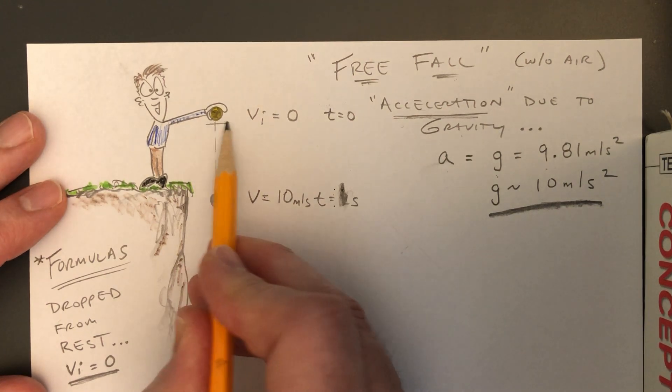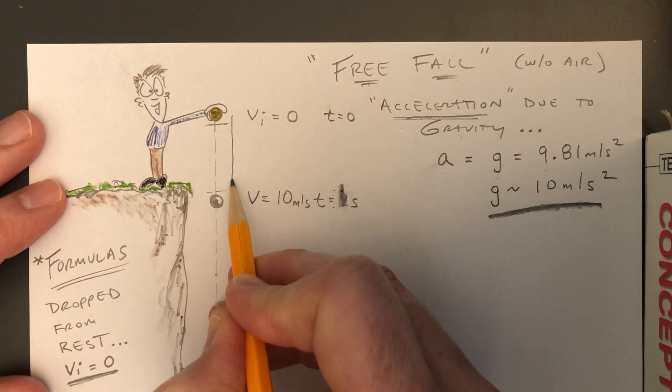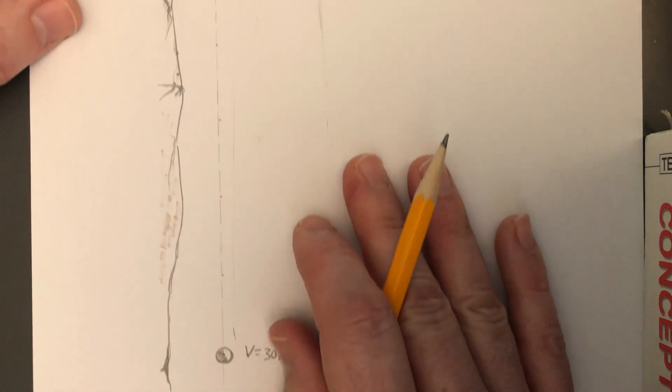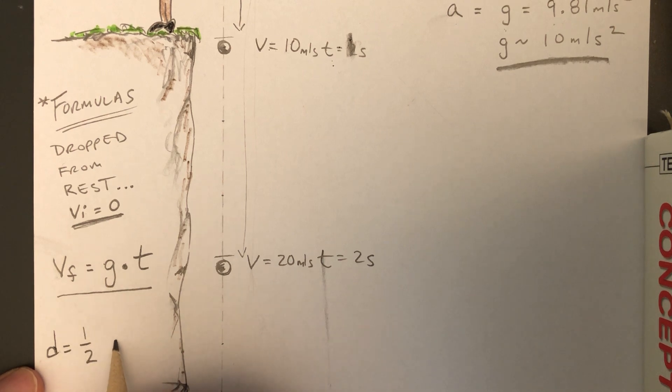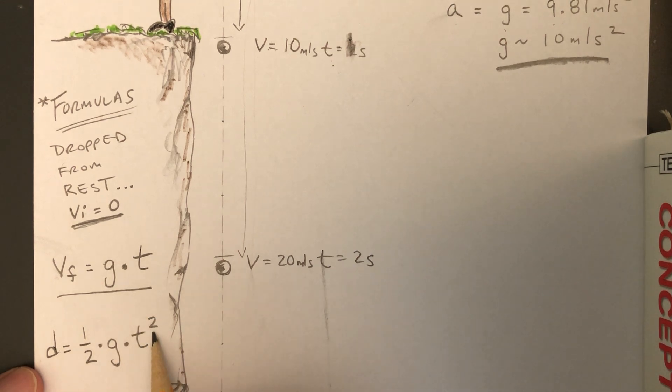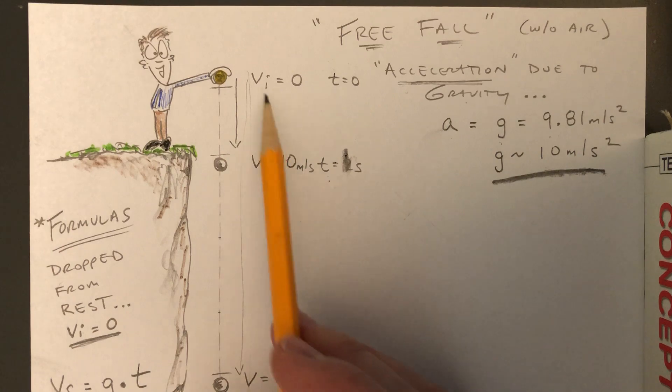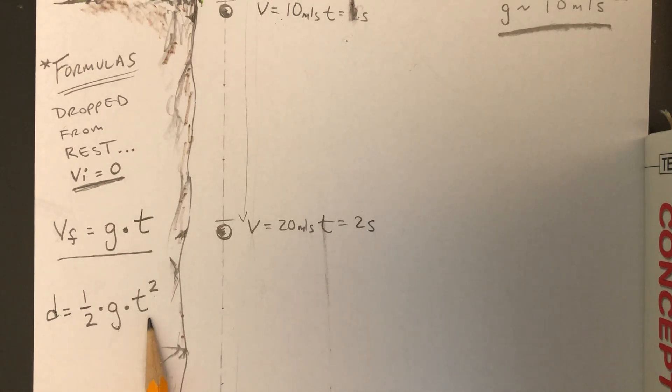The second one is the distance, the distance between, or the total distance that the object falls from where it starts. So we're talking about this distance here, all the way down to the bottom. Well, this formula we use, a lot of times displacement is delta x, but for this video here, I'm going to use d. It might be easier for you. D equals one-half g times t squared. Squared is very important.